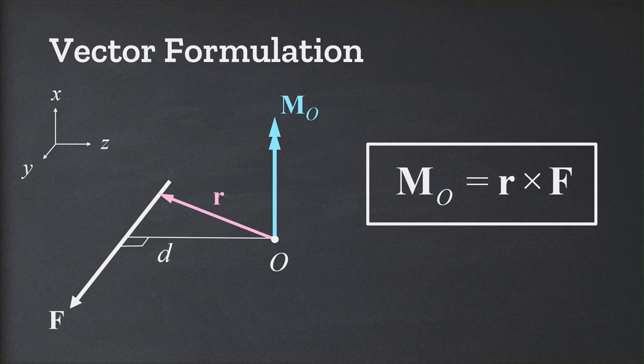One of the very convenient things about the vector formulation of the moment is that the position vector r does not need to be the perpendicular distance between the rotation axis and the force. In fact, it can be any position vector between the axis of rotation and the line of action of the force, as long as it is in the direction from the axis to the force as shown here.